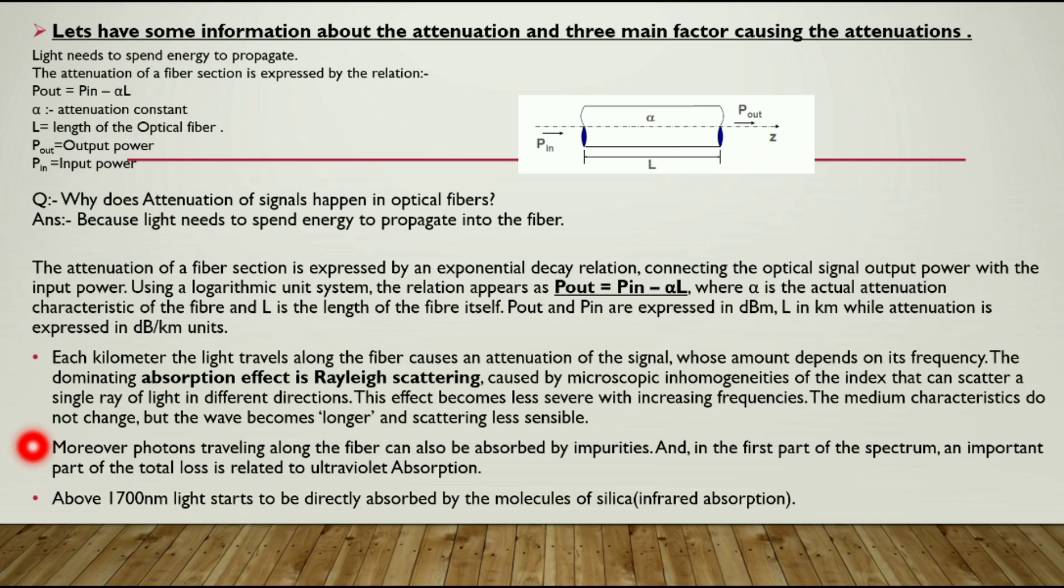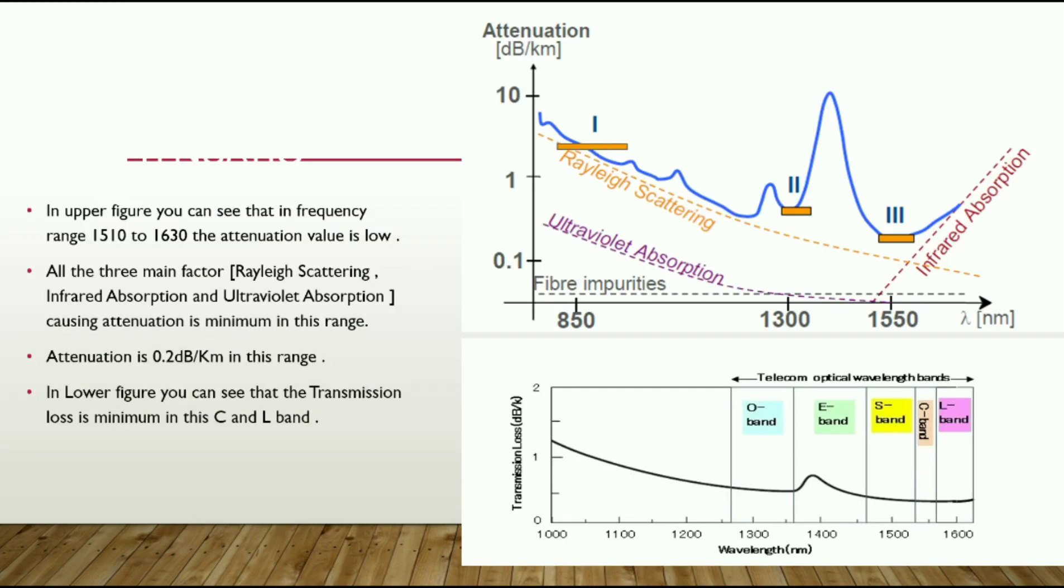We have a range from 1530 to 1625 nanometers which is widely used in the DWDM system. In this figure you can see this is the attenuation in dB per kilometer and this is the frequency.